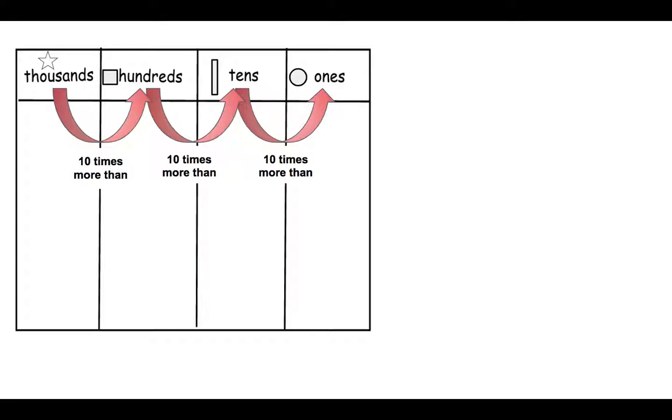Well, I don't know exactly what you typed, but it was probably something similar to this. Each place value is worth 10 times more than the place value to its right.